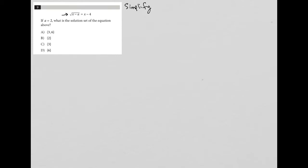We can definitely do some things to simplify that by squaring both sides. But let's see what the question says before I get too far along there. So it says, if A equals 2, what is the solution set of the equation above? So the equation above is square root of x minus A equals x minus 4. The question tells us that A is 2. So I'm going to rewrite this as square root of x minus 2 equals x minus 4.